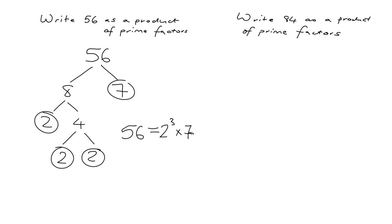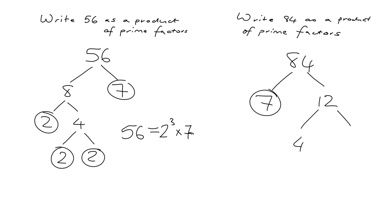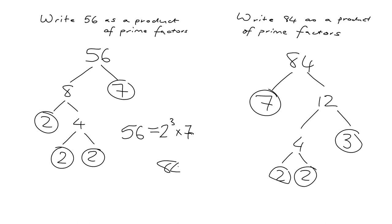Now let's look at 84. 84 is just 7 times 12 — a simple way to start. 7 is a prime number. 12 is 4 times 3, and 3 is a prime number. 4 is 2 times 2, and those are both primes. So 84 written as a product of primes is 2 squared times 3 times 7.